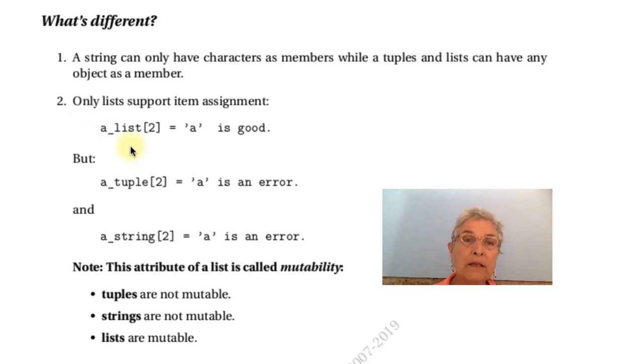Only lists support item assignment. That means, on a list, you can have square brackets with an index on the left side of the assignment. We've never seen that. That means we are assigning a particular item, the tooth element to be an A. If I try to do that with a tuple or a string, I'm going to crash. Only lists. This is called mutability. Tuples are not mutable. Strings are not mutable. Lists are mutable.